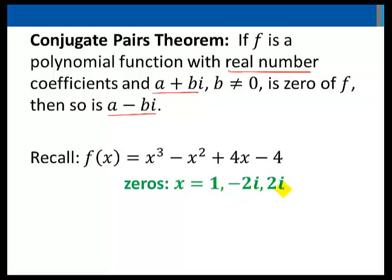For this polynomial to have real number coefficients as it does, and for negative 2i to be a zero, it will have to be true that 2i, its complex conjugate, is a zero as well.